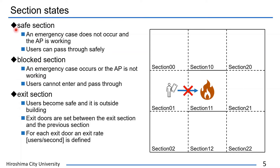First, the state becomes a safe section in the case that the emergency does not occur and the AP is working. Users can pass through the section safely. Second, the state becomes a blocked section in the case that an emergency such as a fire disaster occurs, or the AP is not working. Users cannot enter and pass through the section because it might not be safe.